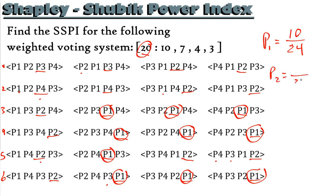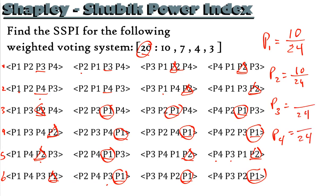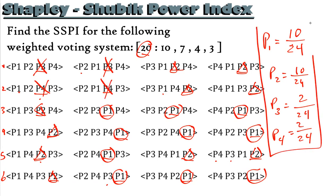Player 2's denominator is also 24. Counting the underlines for player 2 gives us 10. So player 1 has 10/24 and player 2 has 10/24 — that accounts for 20 underlines, leaving 4 remaining. Player 3 was underlined 2 times and player 4 was underlined 2 times. That accounts for all 24 underlines. This gives us the Shapley-Shubik power index for each player in this 4-player example.